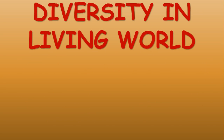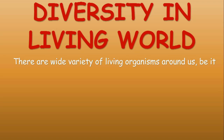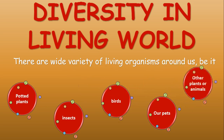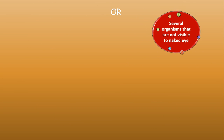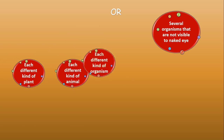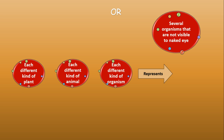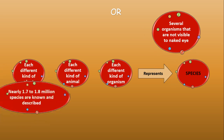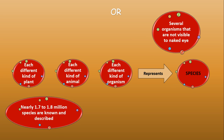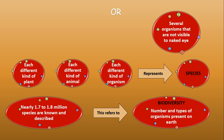Next is diversity in the living world. There is a wide variety of living organisms around us — potted plants, insects, birds, pets, and organisms not visible to the naked eye. Each different kind of plant, animal, or organism represents a species. There are nearly 1.7 to 1.8 million known and described species, and this is referred to as biodiversity, defined as the number and types of organisms present on Earth.